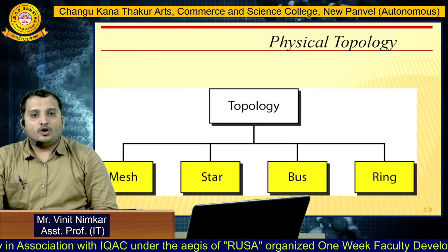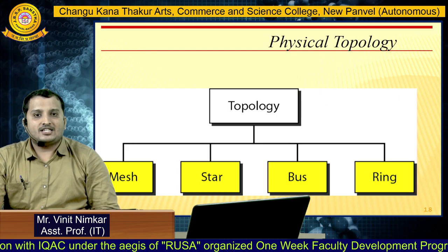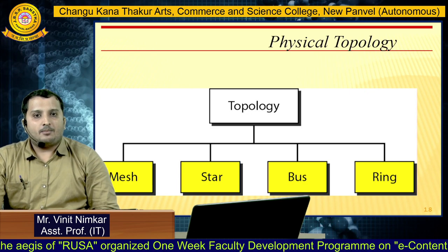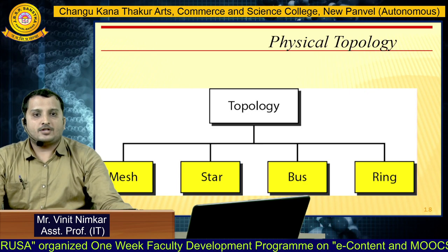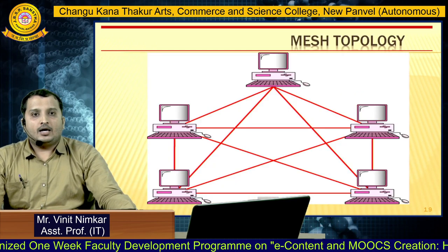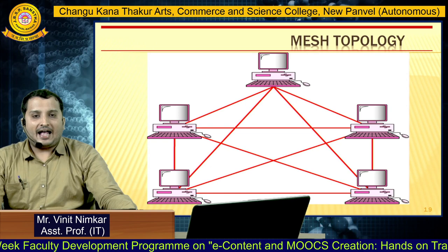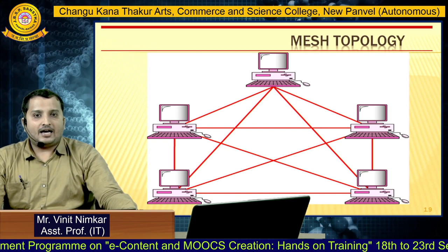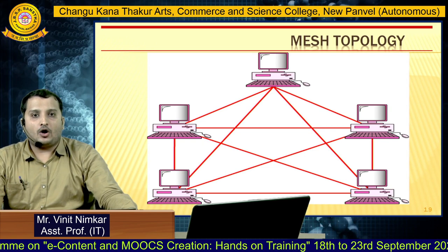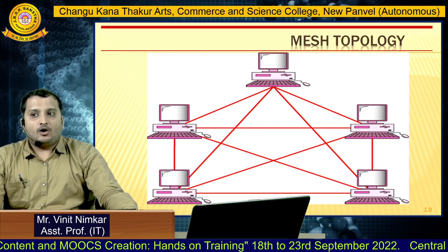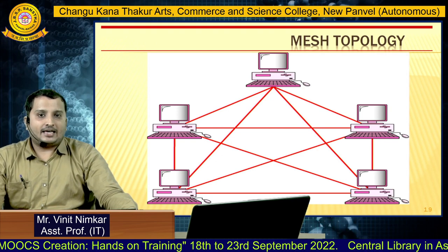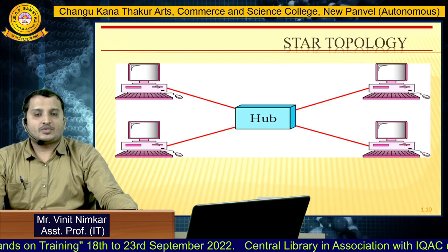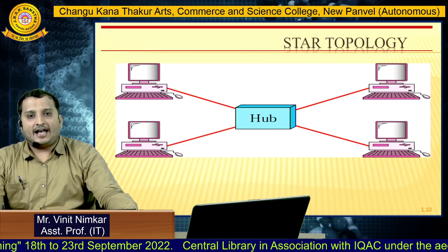Next, let's talk about topologies. Topologies are the different types of connections which we can use to connect devices in a network. The types are mesh topology, star topology, bus topology, and ring topology. First, mesh topology — as we can see in the diagram, in mesh topology all devices are connected to each other via separate dedicated links, meaning only two devices can connect on a single link.